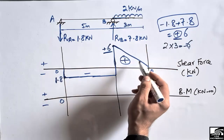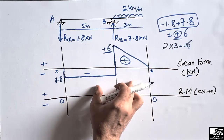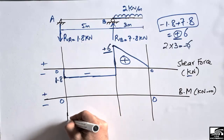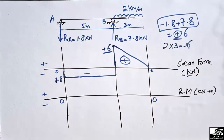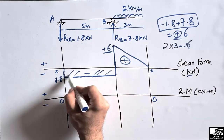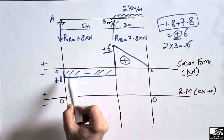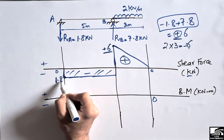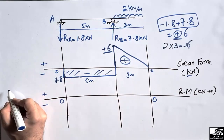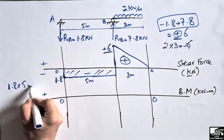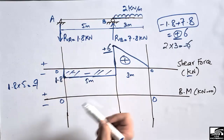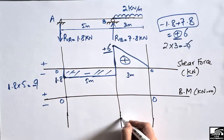Now to draw the bending moment diagram from the shear force diagram, we calculate the areas of the shear force regions. For the rectangular negative region: height = 1.8 kN and length = 5 m, so area = 1.8 × 5 = 9. Since the shear force is below the reference line, this is −9 kN·m. So the bending moment at B is −9 kN·m.